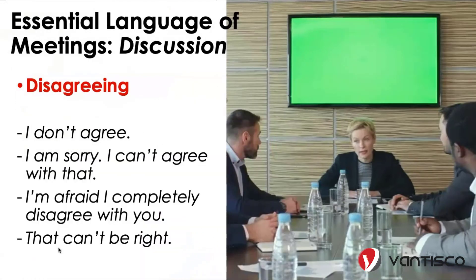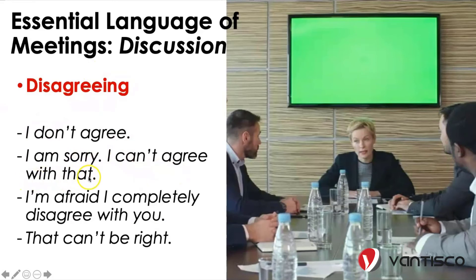إذا أنا ما بوافق على النقطة اللي عم بيحكوا عنها، كيف ممكن أعبّر عن disagreement؟ ممكن نقول: 'I don't agree.' أو 'I am sorry, I can't agree with that.' أو 'I'm afraid I completely disagree with you.' أو 'That can't be right.'